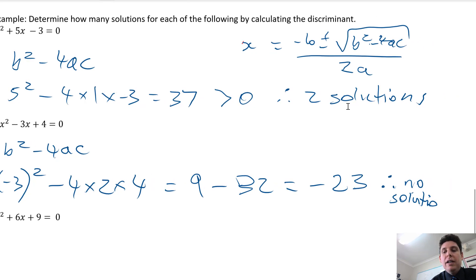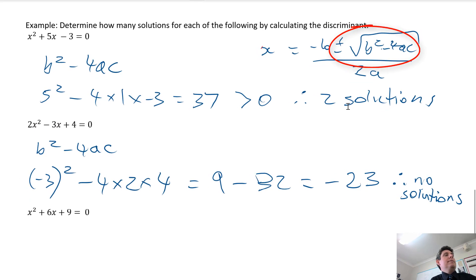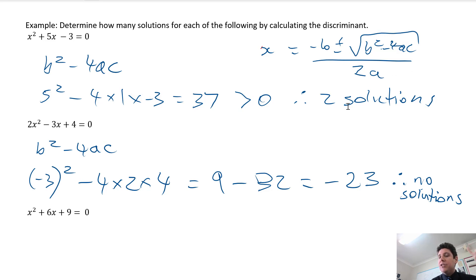Because we can't have a negative inside a square root. Positive means two solutions. Negative, no solutions.